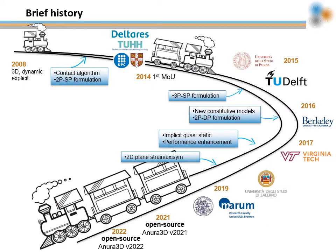The development of the current Anura3D code began in 2008. Different groups started using and developing the material point method for geotechnical applications and soil-water structure interaction problems. In 2014, and after several years of collaboration, Deltares, the University of Hamburg, Barcelona Tech, and the University of Cambridge decided to combine efforts to develop an MPM software. The first memorandum of understanding was signed and the MPM research community was defined.